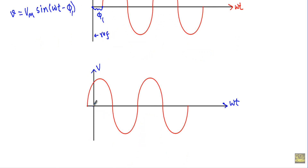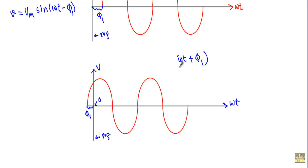Now consider another waveform where the alternating quantity starts its journey φ₁ degrees ahead of the zero reference position. The angle traveled by the alternating quantity at any instant will be equal to ωt + φ₁. Therefore, we write the equation of this alternating quantity as: V = Vm sin(ωt + φ₁).